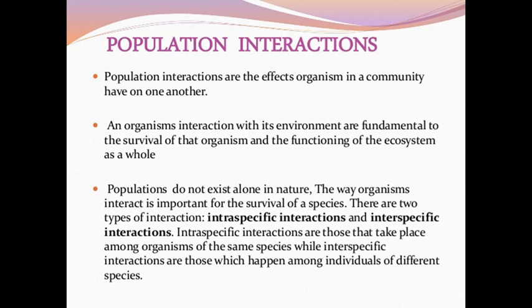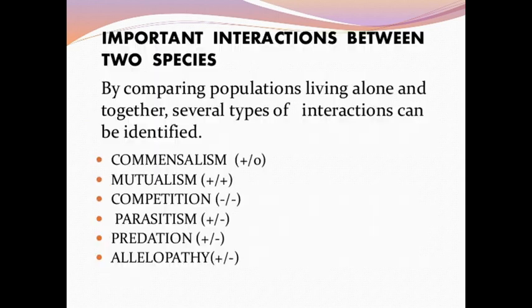These six kinds of interaction — commensalism, mutualism, competition, parasitism, predation, and amensalism (allelopathy) — are all types of population interaction involving different species in a population, either interspecific or intraspecific.